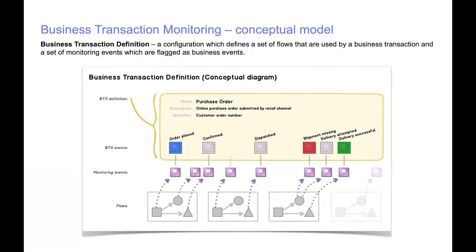This slide illustrates the concepts of how Business Transaction Monitoring works. Business Transaction Monitoring, or BTM for short, requires you to define monitoring events in your message flows. Each monitoring event must have a global transaction identifier. This is needed so that AppConnect Enterprise can correlate the monitoring events as part of a single business transaction.